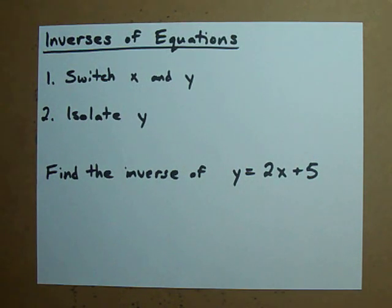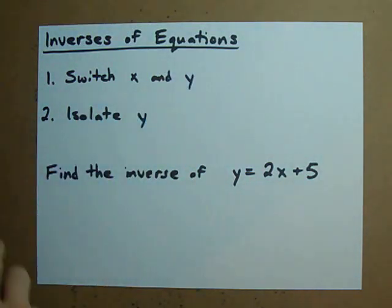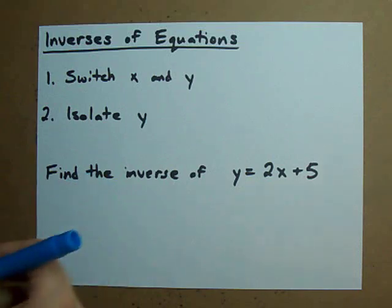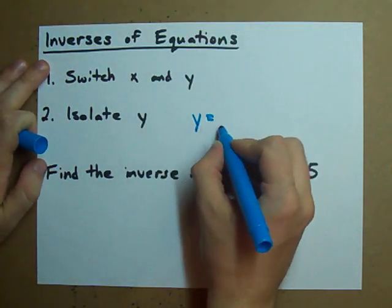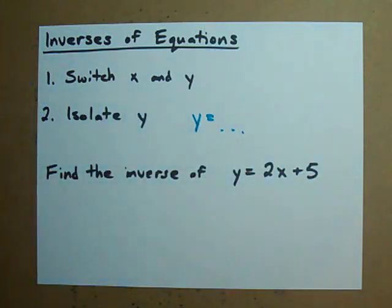How to find the inverse of an equation. Two easy steps. If you have an equation, just switch x and y and then isolate y. What we mean by that is get it so that you have y equals anything. Just get y on one side and everything else on the other side.